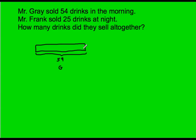Gray, just so I know what that information represents. All right, then it says Mr. Frank sold 25 drinks at night. I'll just continue along here and from here to here will be Mr. Frank and that's 25. So this right here will represent Mr.